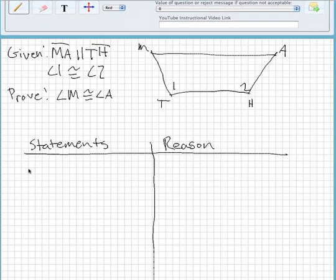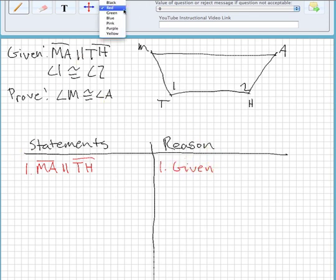The first thing you want to do is start with your given. So the first is going to be MA and TH are parallel, and the reason is given. And then we're going to write the other given down: angle 1 and angle 2 are congruent. Also, this is given.